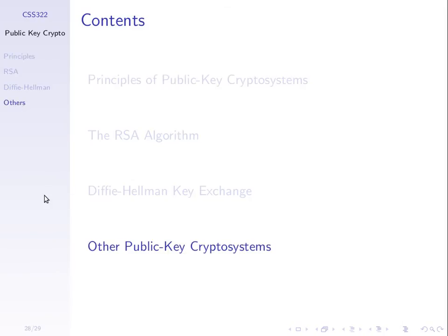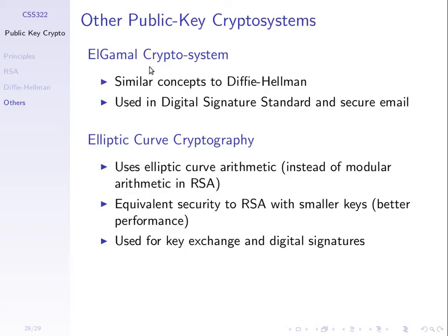There are other algorithms. There's something called El Gamal cryptosystem, which is used in the digital signature standard. Digital signatures are a digital way to represent someone proving it came from them. There's another type called elliptic curve cryptography, which presents a different set of arithmetic to perform. But we will not touch upon how they work.